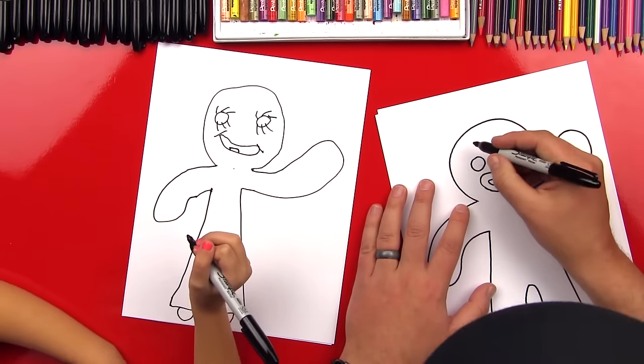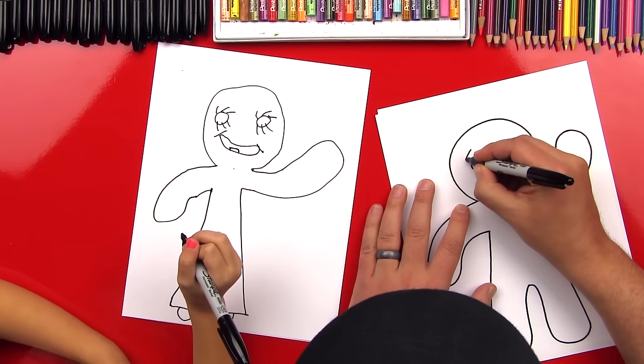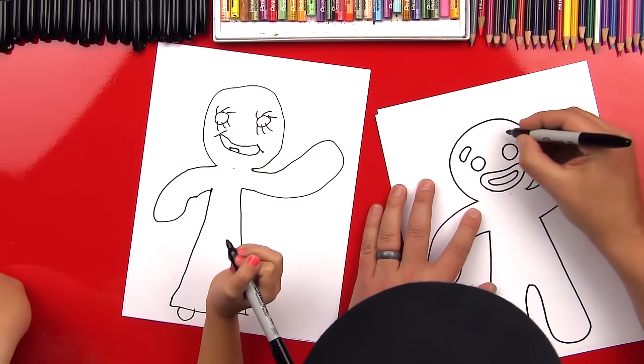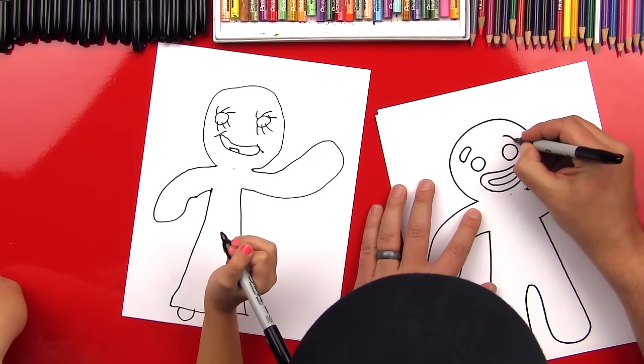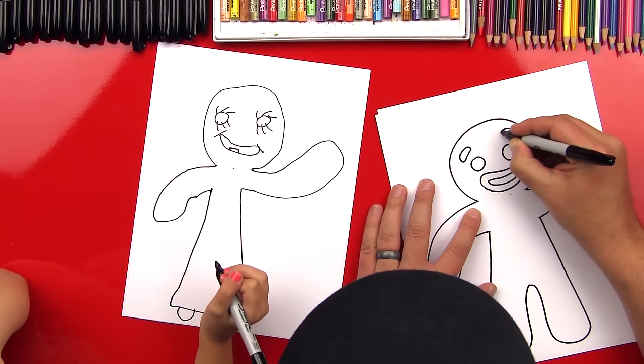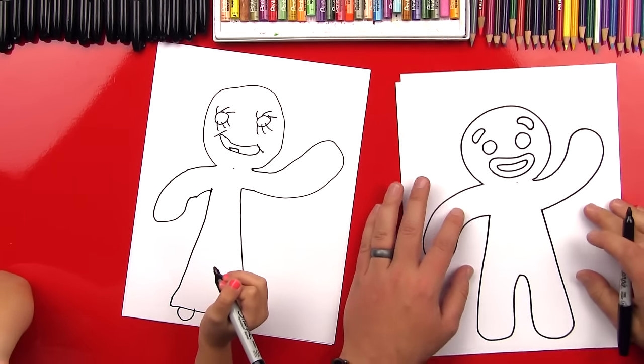Hey, now I'm gonna do eyebrows on mine, and if you don't want to do eyebrows you don't have to. No, no. So I'm gonna draw little hot dog shapes or little jelly bean shapes over his eyes.